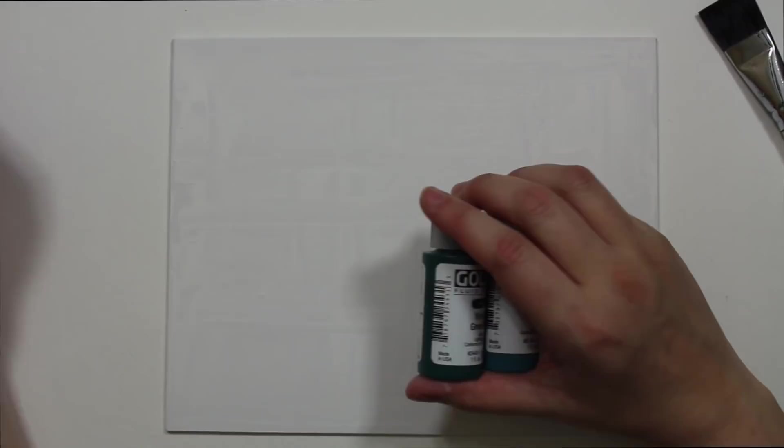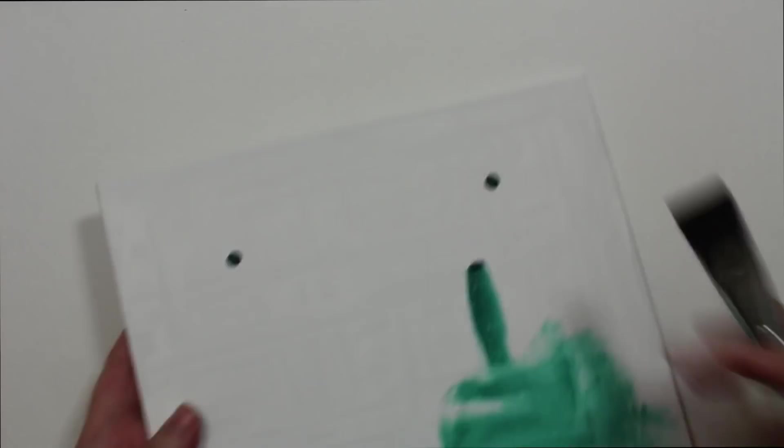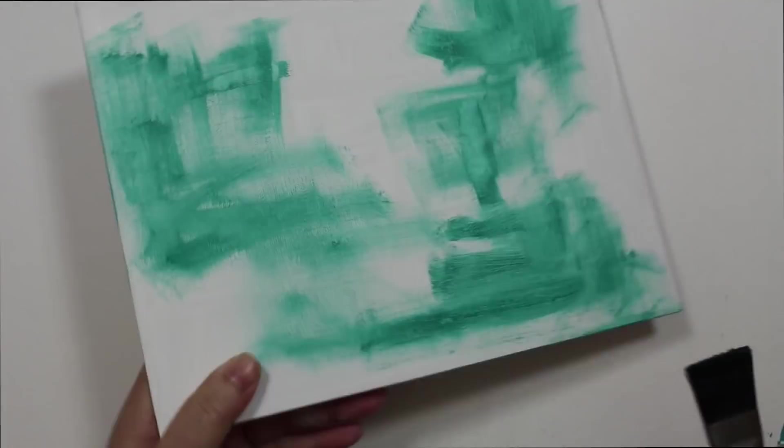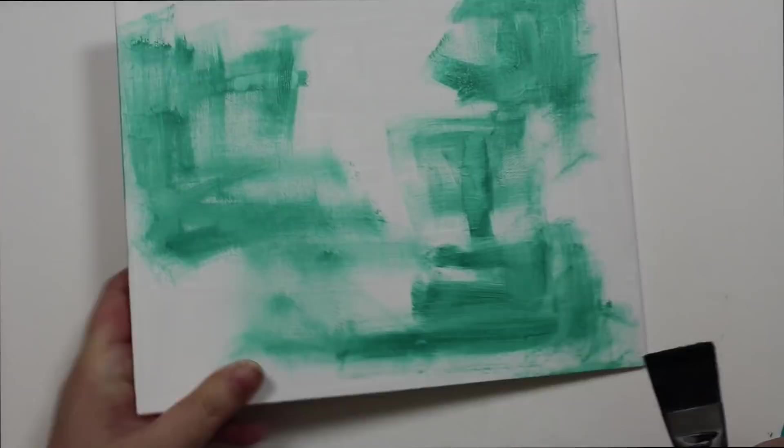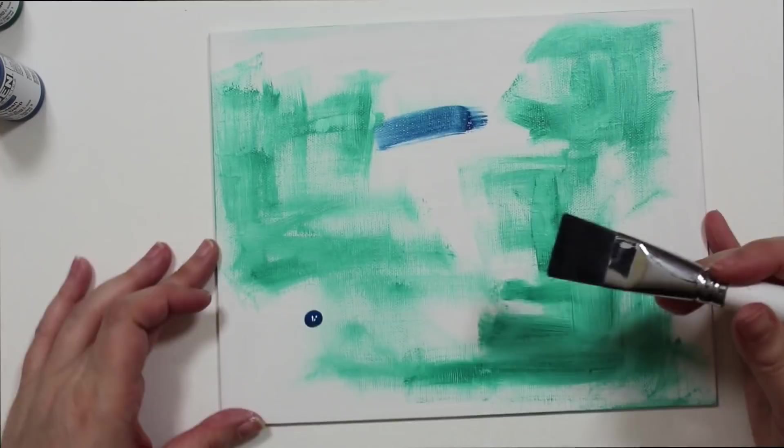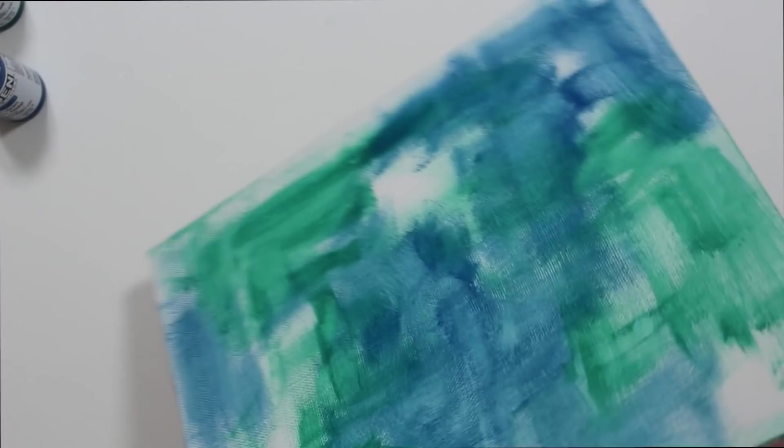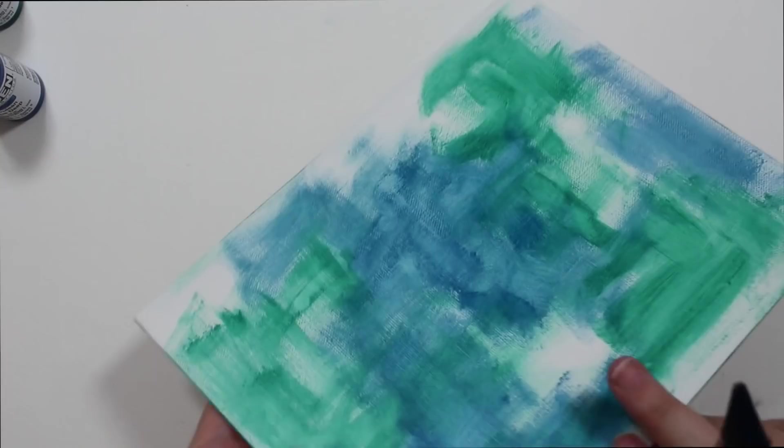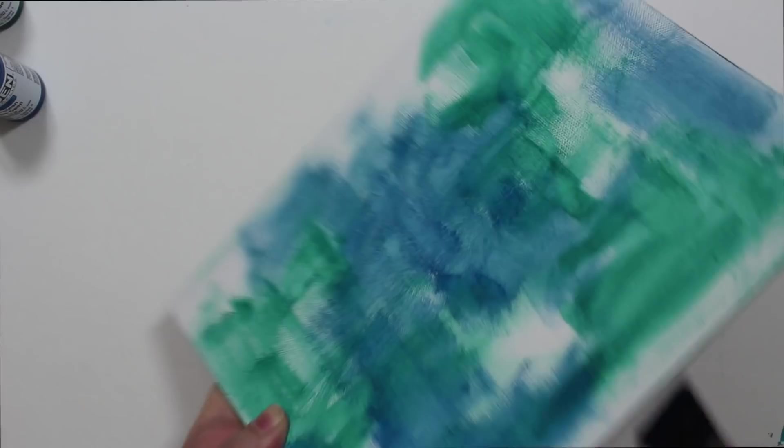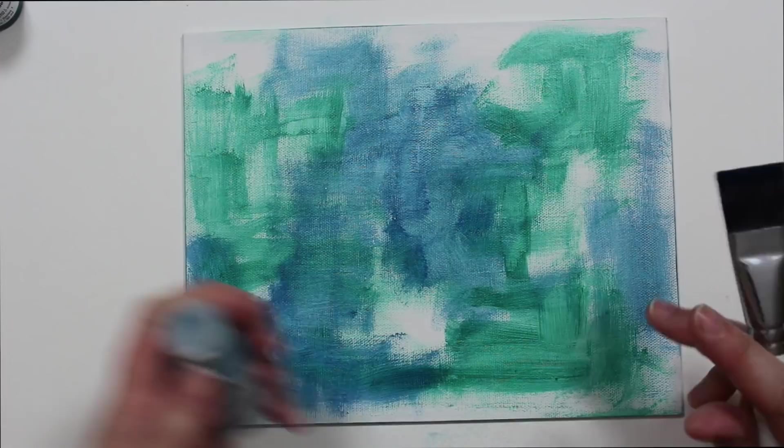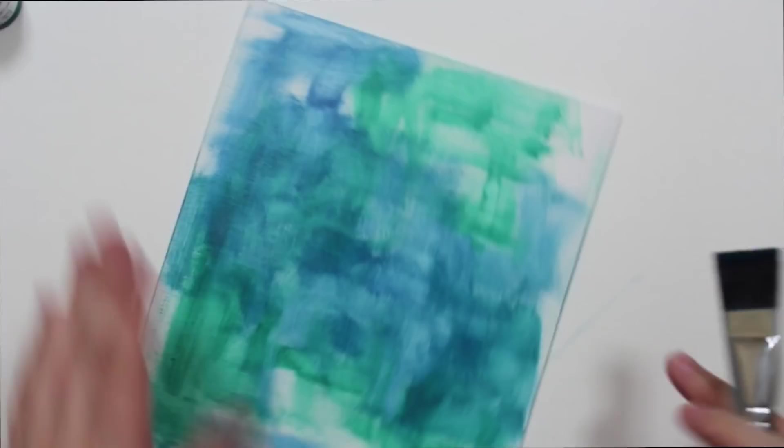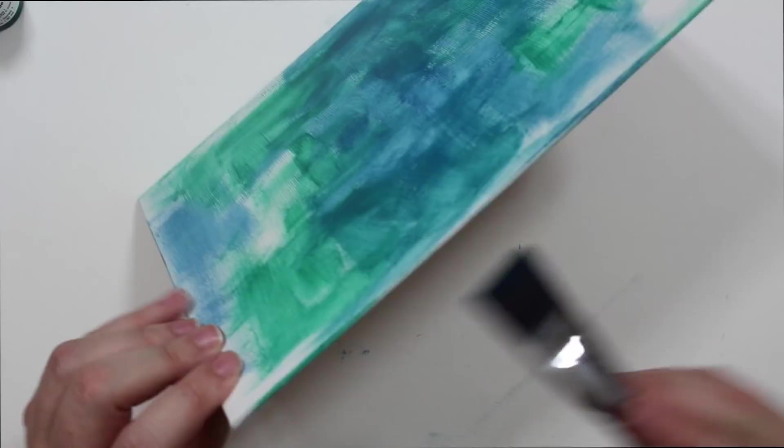I'm just going to kind of start and make a little bit of an abstract mess which mama loves. I'm going to start with that viridian green hue, then the cerulean blue deep because it's a little more translucent, and let's try the cobalt turquoise.